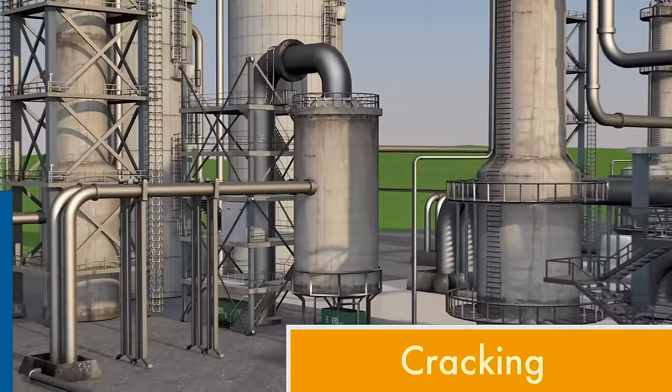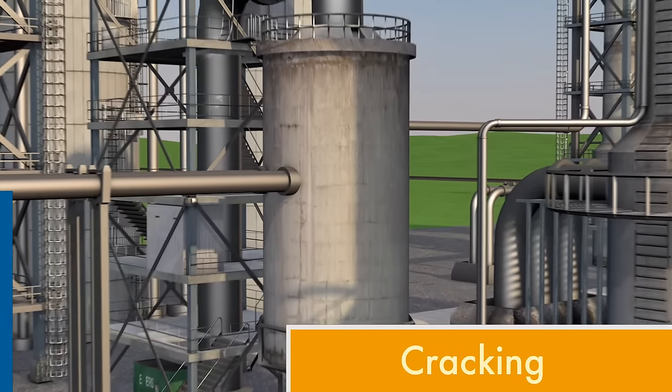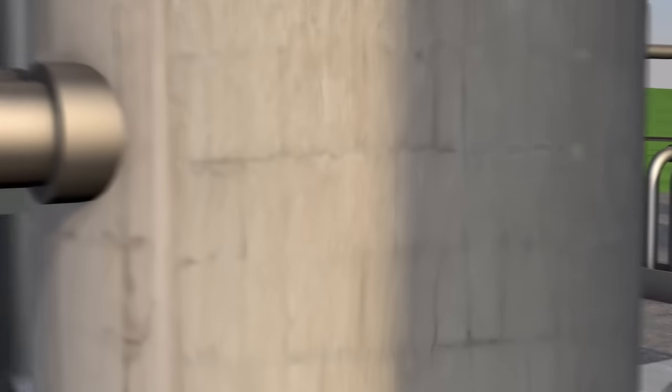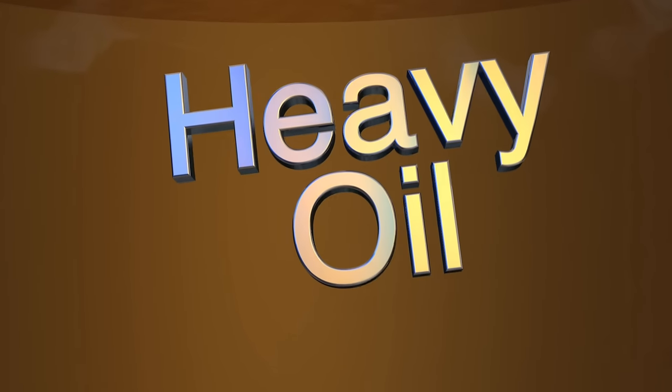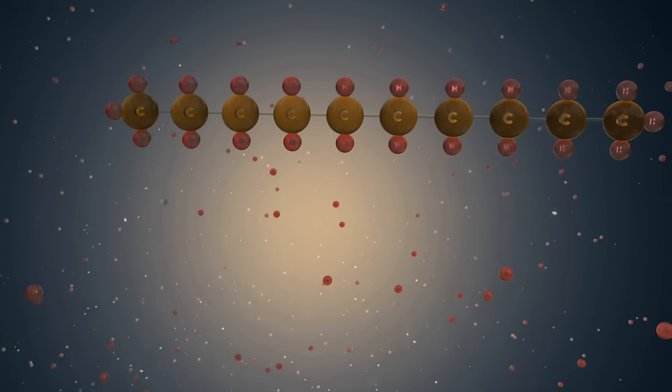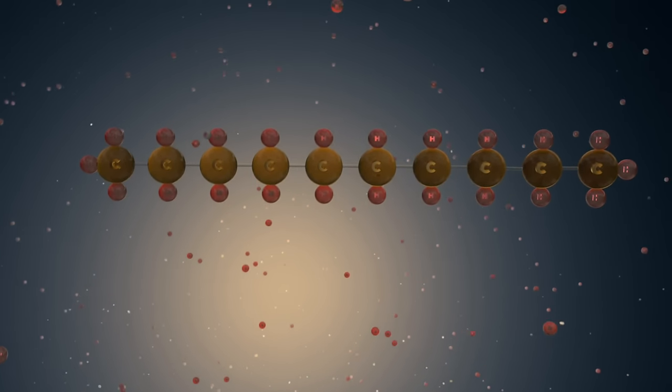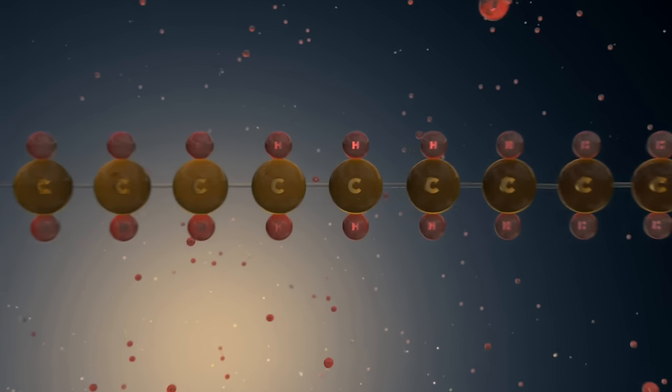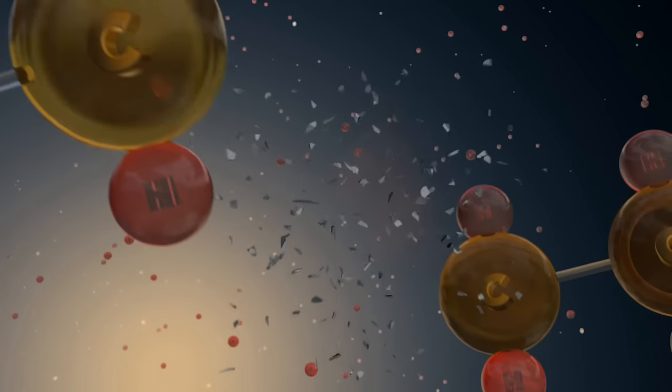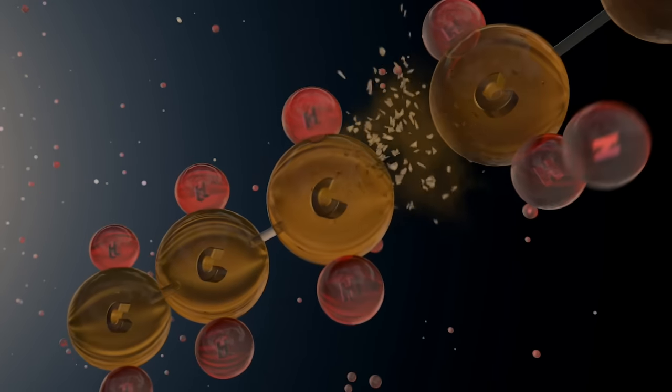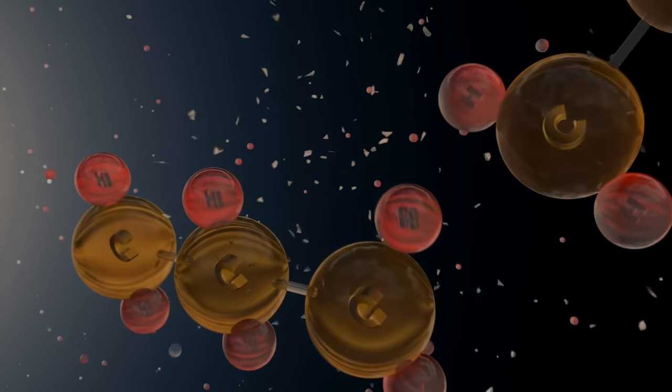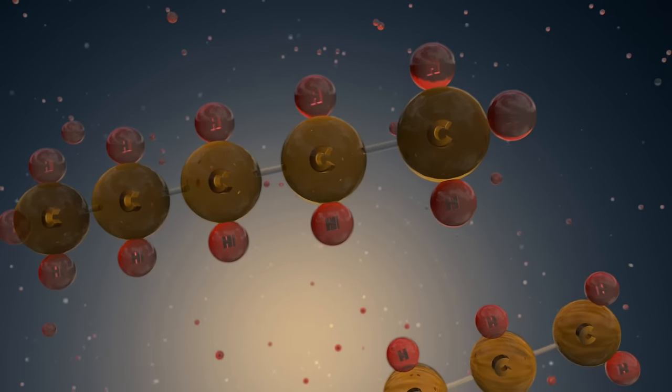A process called cracking is used to maximize the usefulness of heavy oil. Heavy oil has long strings of carbon and hydrogen molecules. Using a catalyst, these molecules can be broken into smaller chains, transforming the heavy oil into lighter, more valuable fluids.